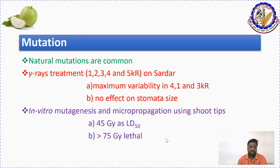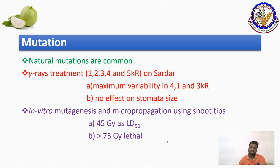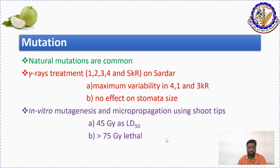Mutation breeding involves identifying natural mutations and also induced mutations. Chemical mutagens and physical mutagens such as gamma radiation have been standardized and attempted in guava. In vitro mutation using micro shoot tip culture has also been attempted with both chemical and physical mutagens, but so far no successful examples have been achieved.